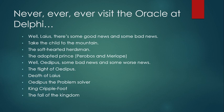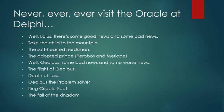The herdsman was soft-hearted. Though the child's feet were pierced at the ankle and bound, he took the child up on the mountain and then down the other side to another kingdom, to the king and queen Periboea and Merope, and told them, 'Here's a child of royal blood.' They couldn't have children and gave him to them. They raised him as their own son. He became known as Oedipus, the cripple-foot. When Oedipus visited the oracle at Delphi, the oracle told him the same thing it had told his father — you're going to kill your father and marry your mother and have children with her.